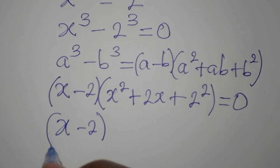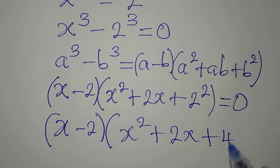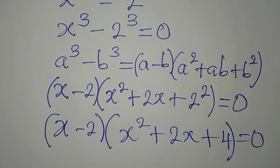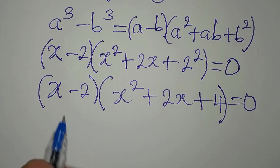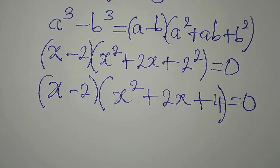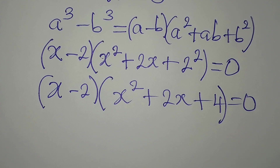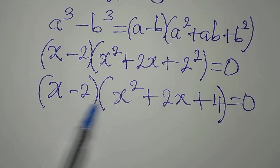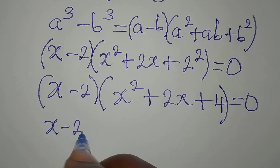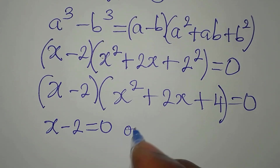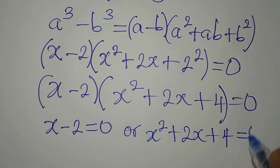We equate everything to 0, giving us x minus 2, multiplied by x squared plus 2x plus 4, equals 0. Now we need to apply the zero product rule — since we are multiplying these two factors to get 0, we can set each factor equal to 0. So x minus 2 equals 0, or x squared plus 2x plus 4 equals 0.